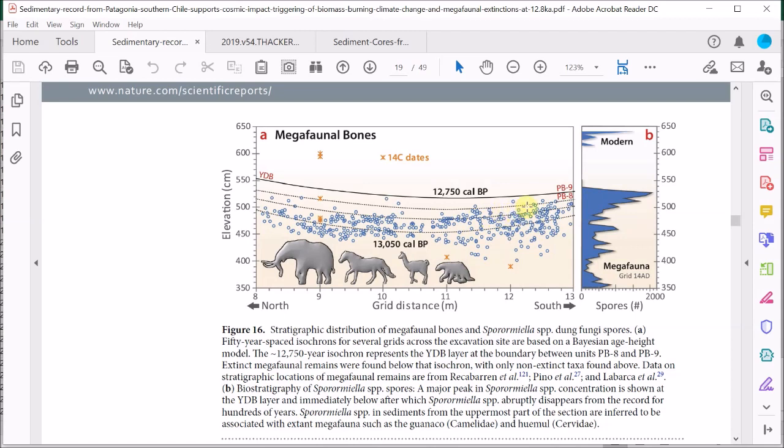moved on to other hunting sites, and this meant the megafaunal population at this site increased, increasing the concentration of dung and spores while the number of bones decreased. But then the Younger Dryas event effectively wiped them out within a generation.